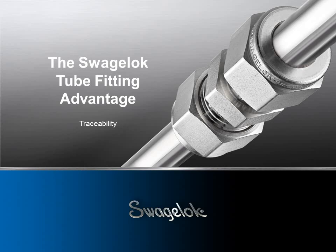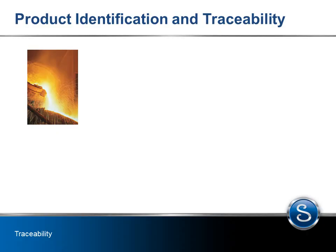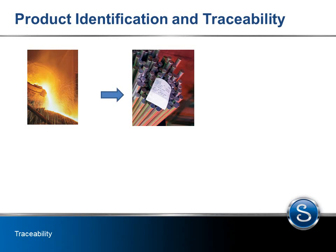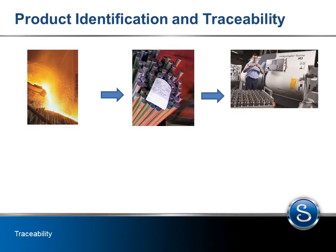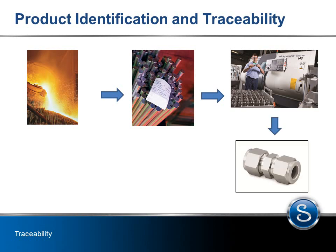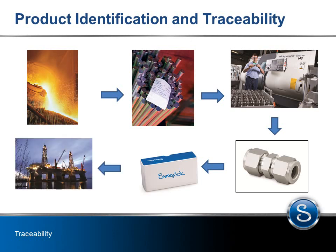Traceability means that a unique identification code or designator is assigned to a heat of material — for example, a heat of steel — and this information is maintained throughout the manufacturing and assembly process. Traceability allows us to track which lot of material makes up a part and which components are in an assembly. Traceability has been an integral part of our overall quality system for decades.